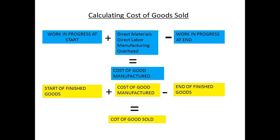To determine the cost of goods sold, we follow a simple procedure. First, we need to determine the cost of goods manufactured: take the figure for work in progress at the start of a period, add any direct materials and direct labour used plus the share of manufacturing overhead, and then subtract the work in progress at the end. The result is the cost of manufacturing goods for the period. Now that we have the cost of manufactured goods, take the figure for finished goods at the start, add the cost of goods manufactured, subtract the figure for finished goods at the end, and the result is the cost of goods sold.